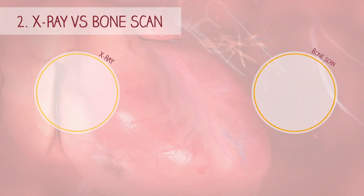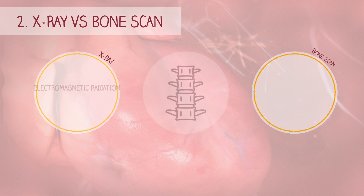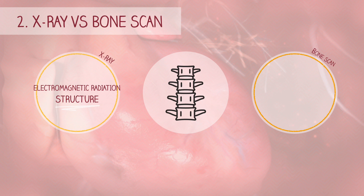The key difference between an X-ray and a bone scan lies in their imaging methods and the information they provide. X-rays use electromagnetic radiation to identify abnormalities in bone structure, such as fractures. A bone scan, on the other hand, works with radioactive tracers that emit gamma rays to highlight areas with abnormal bone function, rather than structure, and offers insight into conditions like infections or tumors. Detecting these metabolic changes is especially valuable in cases where structural alterations are not yet visible on X-rays.